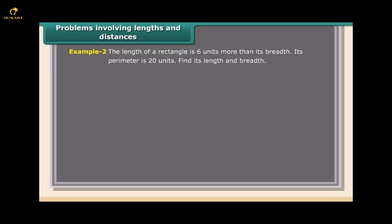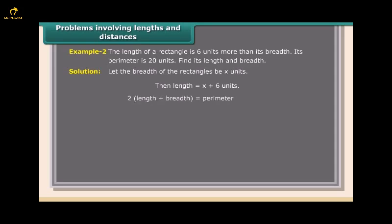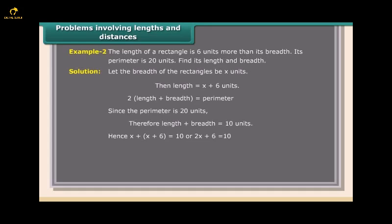Length and distance problem: The length of a rectangle is 6 units more than its breadth and its perimeter is 20 units. Let breadth = X, then length = X + 6. Since perimeter = 2(length + breadth) = 20, length + breadth = 10. So X + X + 6 = 10, giving 2X = 4, X = 2. Breadth = 2 units and length = 8 units.